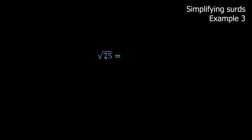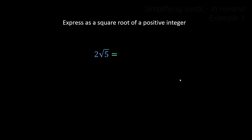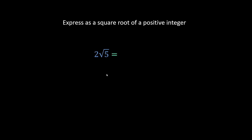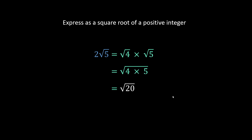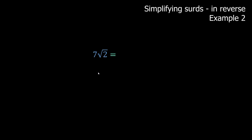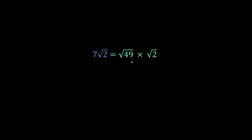Skipping some steps — square root of 75 becomes square root of 25 times square root of three, which is five root three. Now you might get it the other way: express as a square root of a positive integer. To put the two back underneath the radical, two is the same as square root of four, so we use the reverse of our rule to join them. Square root of four times square root of five becomes square root of 20. Similarly, seven root two — we square the seven to get 49, so square root of 49 times root two gives us square root of 98.